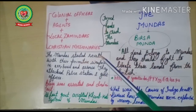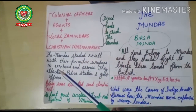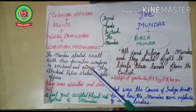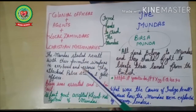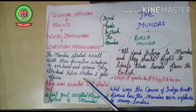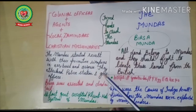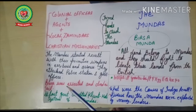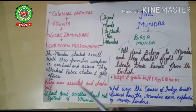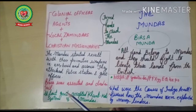Under the leadership of Birsa Munda, the Mundas started a revolt using old and primitive weapons like axes, bows, and arrows. They attacked police stations and government offices. Birsa Munda was eventually arrested and died in jail.